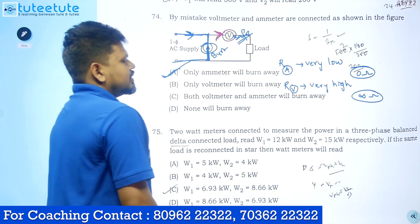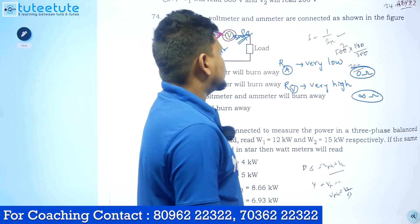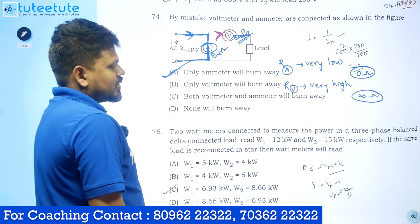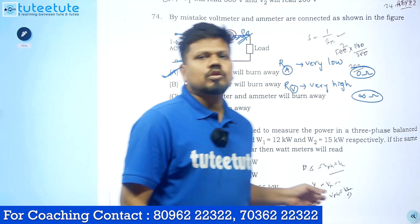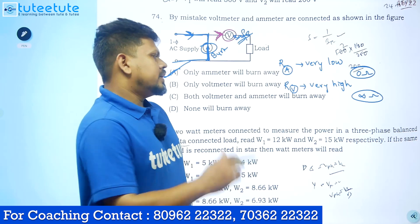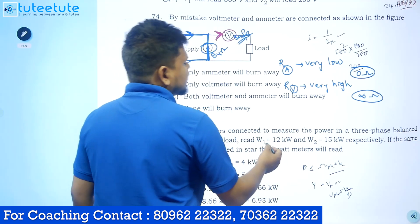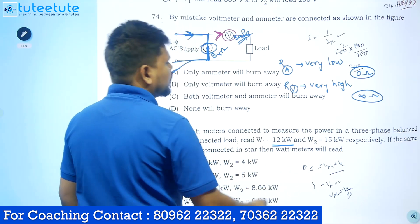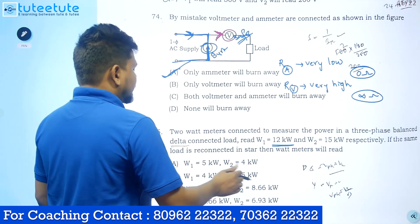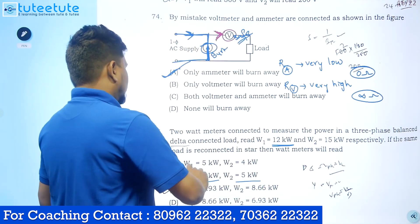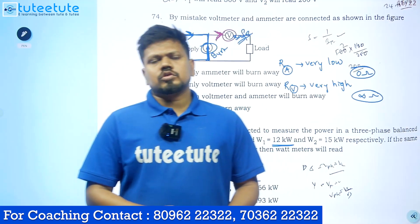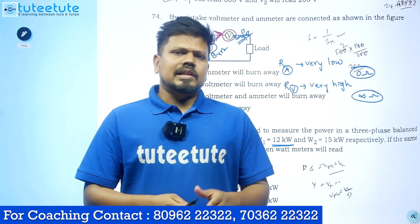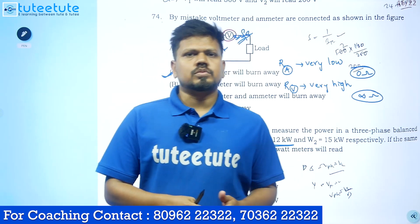Next question: two watt meters connected to measure power in a three-phase balanced delta-connected load read W1 = 12 kilowatt and W2 = 15 kilowatt. If the same load is reconnected in star, what will the watt meters read? When converting a delta load to star, the watt meter readings are divided by three. So 12 ÷ 3 = 4 kilowatt and 15 ÷ 3 = 5 kilowatt. Answer: 4 kilowatt and 5 kilowatt — option B. Thank you so much.